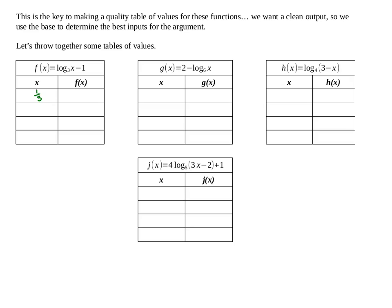I'm going to choose one-third because that's 3 to the negative first; I'll choose 1 because that's 3 to the 0; I'll choose 3 because that's 3 to the first; and I'll choose 9 because that's 3 to the second. Now let's look at what comes out. When x is one-third: log base 3 of one-third gives a perfect exponent of negative 1, then subtract 1 afterwards — that's a negative 2. The minus 1 is not inside the logarithm; it's applied after.